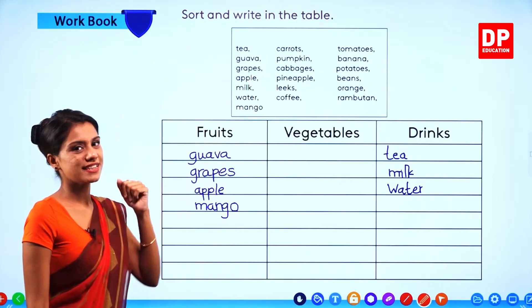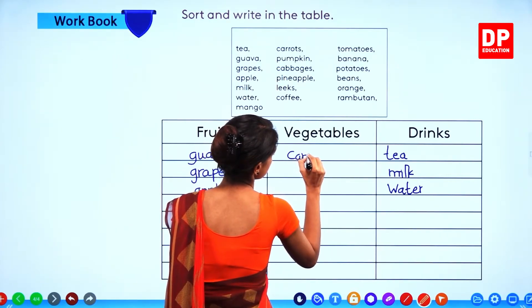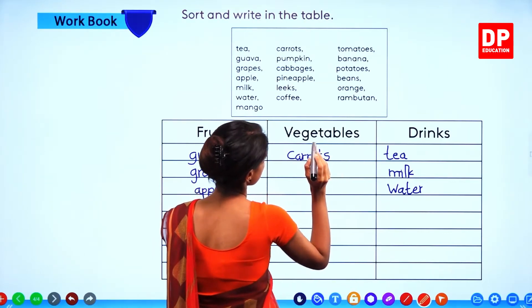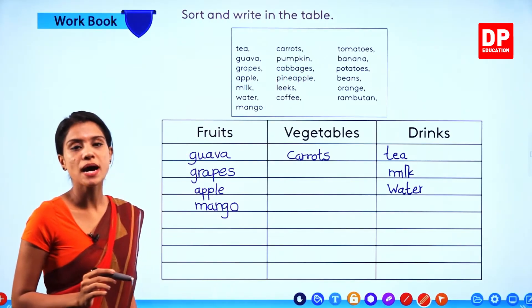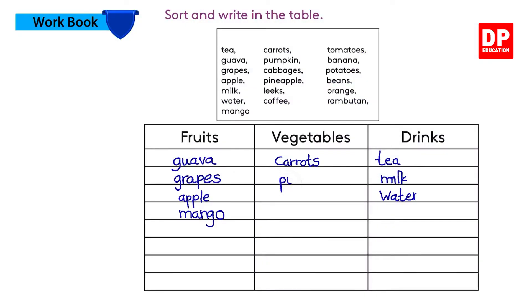Now second one: carrots. Carrots is a vegetable. Right. Then pumpkin — poosani. It's a vegetable. Right. Pumpkin. Then cabbages — gova. It's a vegetable. Right.